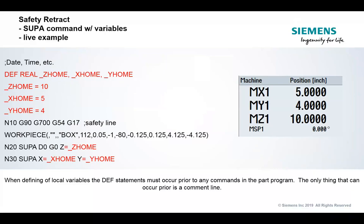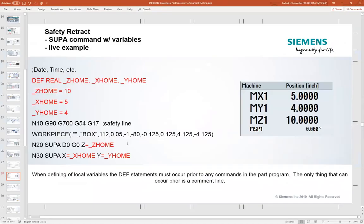SUPA is a great command, but the problem is you tend to have a lot of SUPA statements throughout a part program, and from a user perspective they tend to be jumping all over the place. Here is a great time to get into using what we call local variables — a custom variable that you build that only exists during the run of the program — to feed a value into the SUPA commands. You set the safe position values at the header of the program, so a user can say, 'I know the CAM system told me to send everything to machine zero, but that's not optimal on this specific machine.' Instead of editing potentially 30, 40, or 50 SUPA statements throughout the program, you change it once at the top.